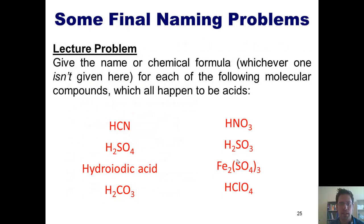Which brings us to some final naming problems I have for you. Give the name or chemical formula, whichever one is missing, for each of the following molecular compounds, which all happen to be acids. So that's the end of this lecture. Please tune in next time as I begin our discussion on Chapter 3's coverage of stoichiometry. I hope you've had an enjoyable time. Until then, I bid you a fond farewell.